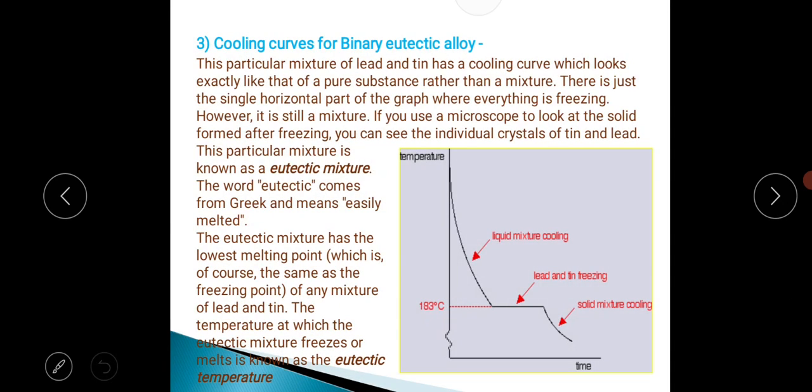Cooling curves for binary eutectic alloy: This particular mixture of lead and tin has a cooling curve which looks exactly like that of a pure substance rather than a mixture. There is just a single horizontal part of the graph where everything is freezing. However, it is still a mixture.